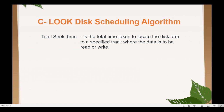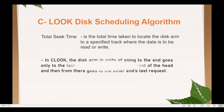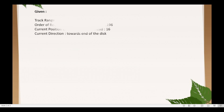In C-LOOK disk scheduling algorithm, the disk arm, instead of going to the end, goes only to the last request to be serviced in front of the head. And then from there, it goes to the other end's last request.